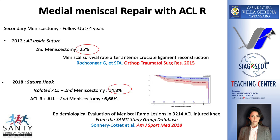Our results of ramp lesion repair were published. In 2012, when we used the all-inside devices, our rate of secondary meniscectomy was around 25%. Then, in 2018, using the hook, our rate of secondary meniscectomy fell to 15%, and even less when we added an ALL reconstruction, which seems to protect the suture.